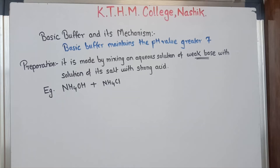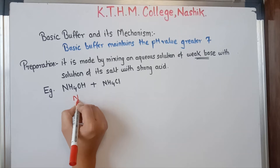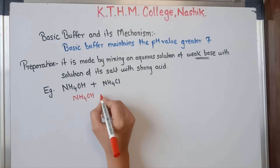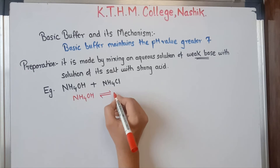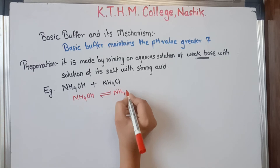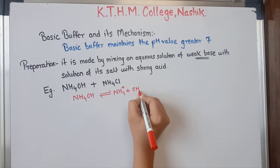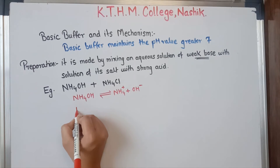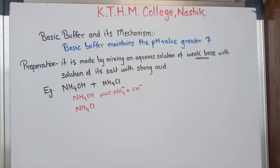By mixing these two we get the solution of basic buffer. Now we will see how they work. NH4OH is a weak base. A weak base is an example of a weak electrolyte which does not completely dissociate — that means it forms an equilibrium with its respective ions: NH4+ plus OH-.